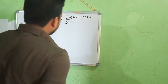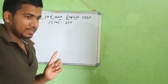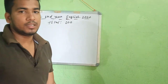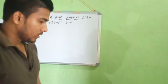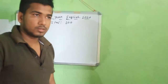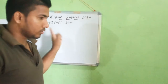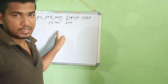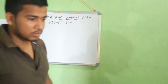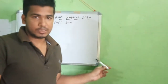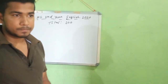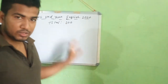So friends, English total marks is 100 — theory, not practical. Total hundred marks. In this video I will discuss the important questions. So please subscribe to the channel, like and share the video.